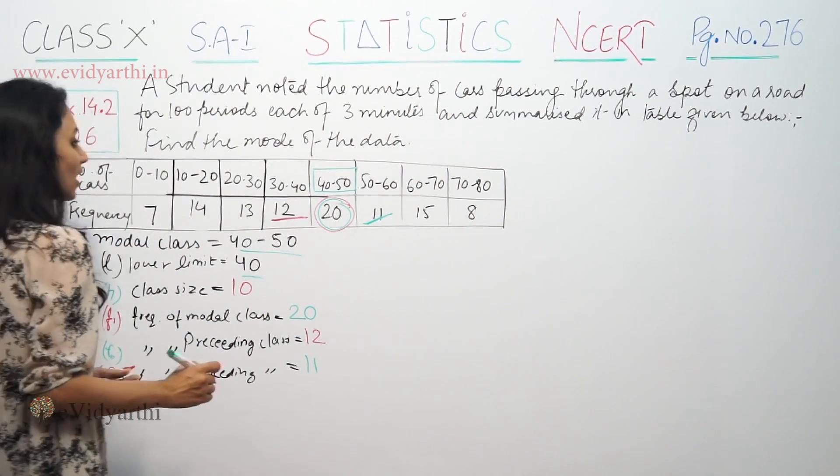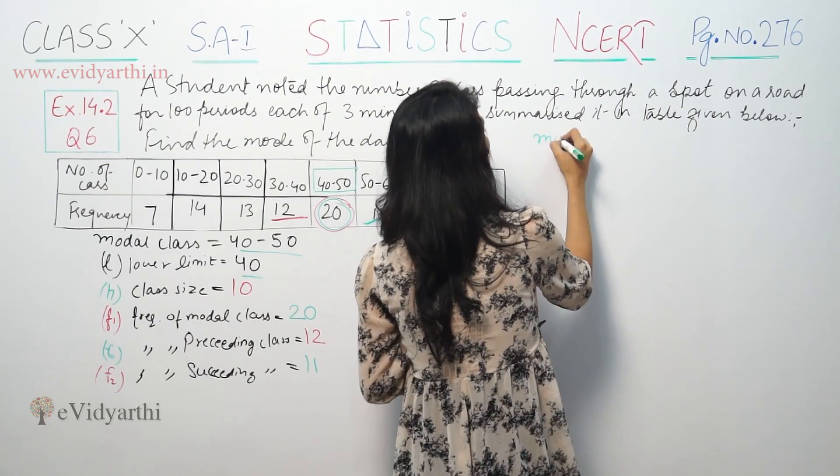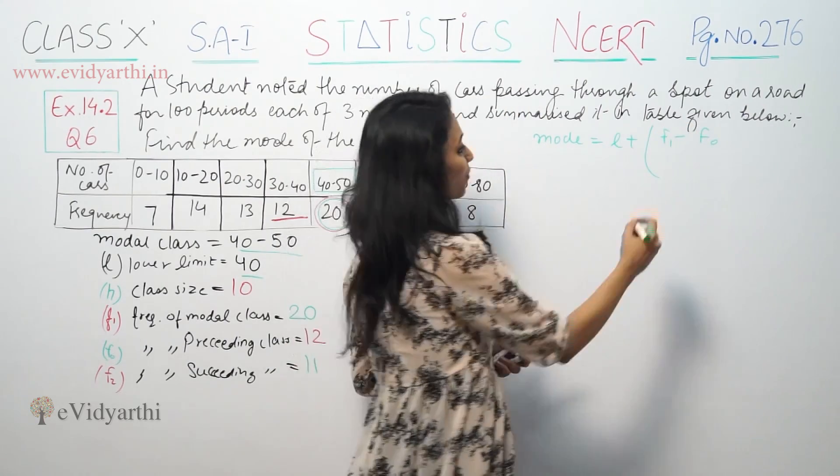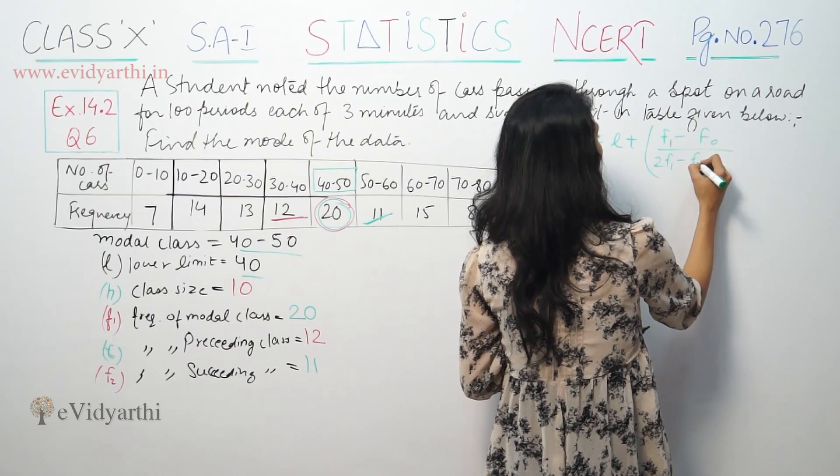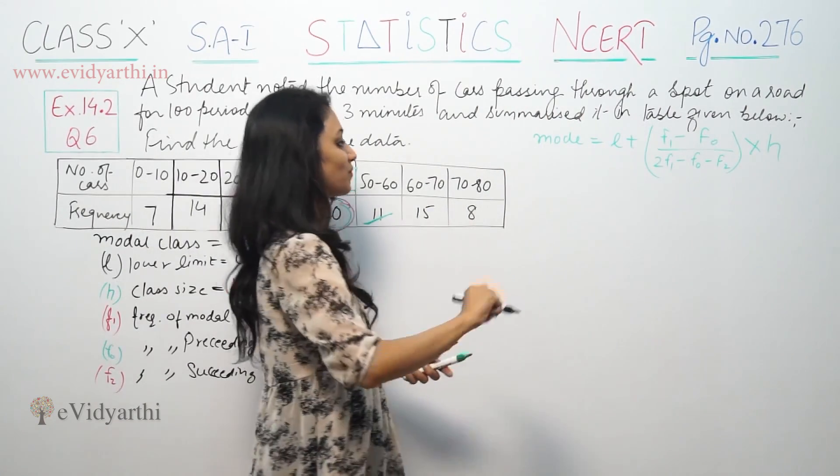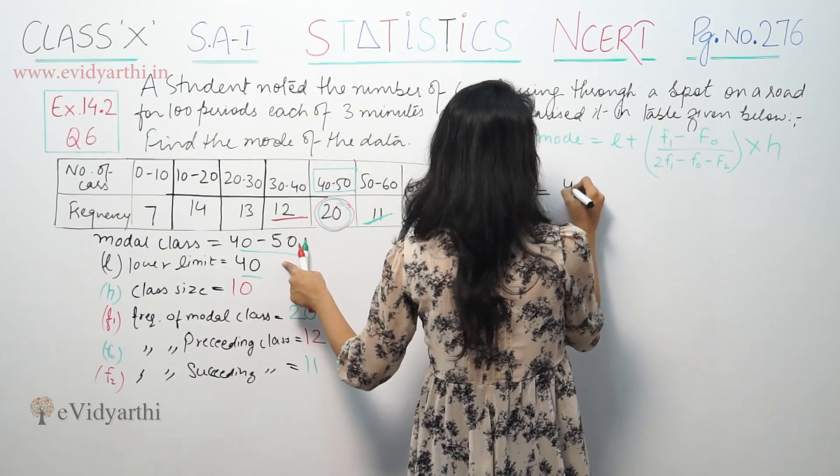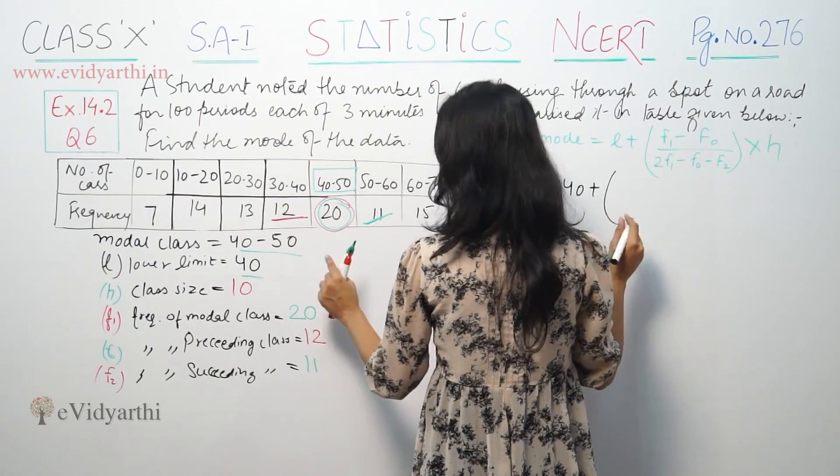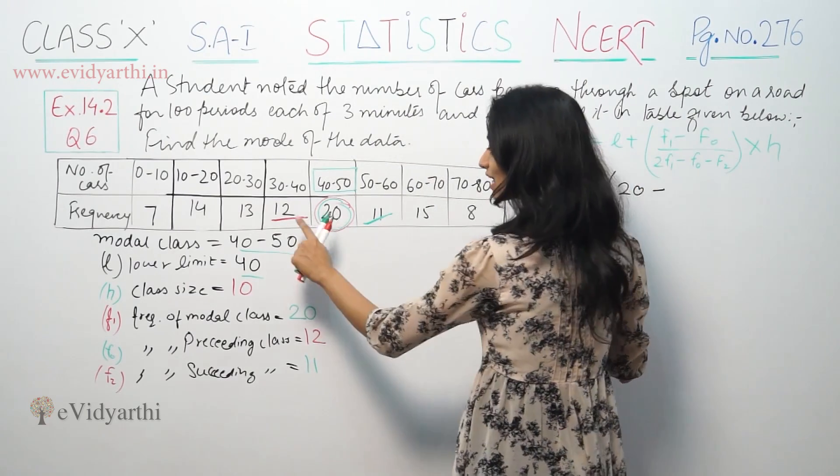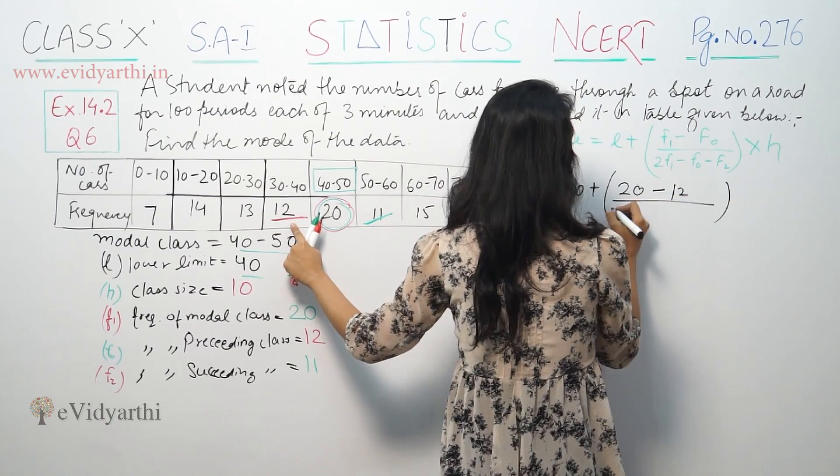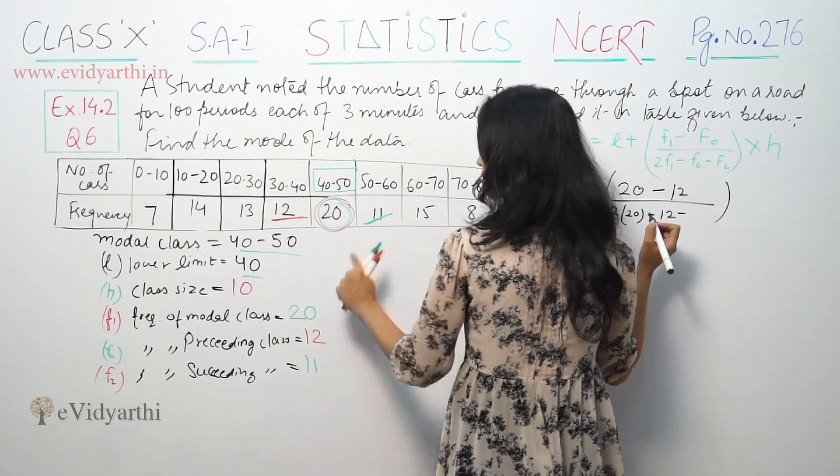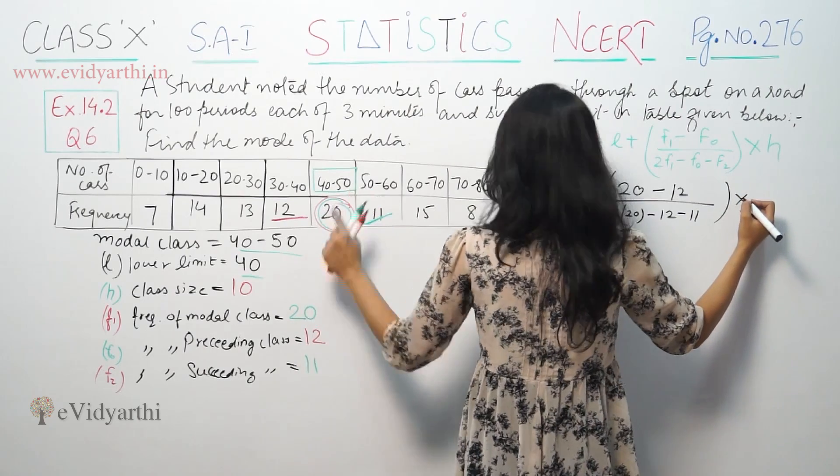Now we have the formula. Mode is equal to L plus (F1 minus F0) upon (2F1 minus F0 minus F2) into H. This is our mode. L lower limit is 40 plus F1, frequency of the modal class is 20. So 20 minus F0 means 12.